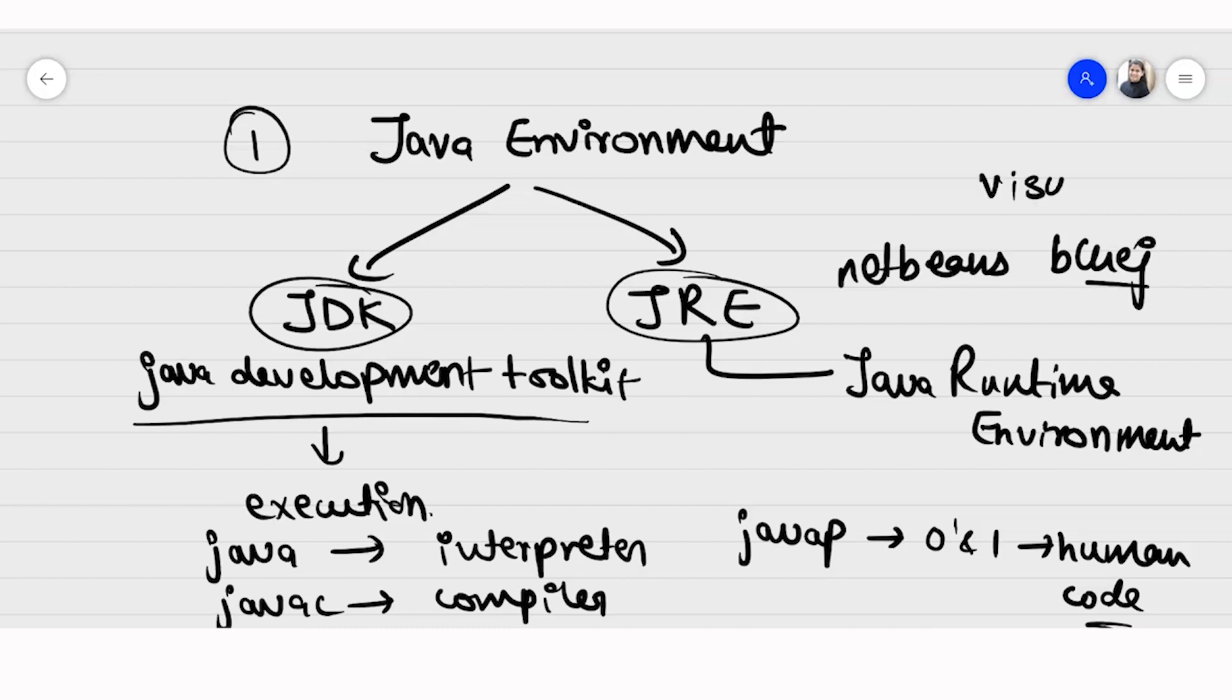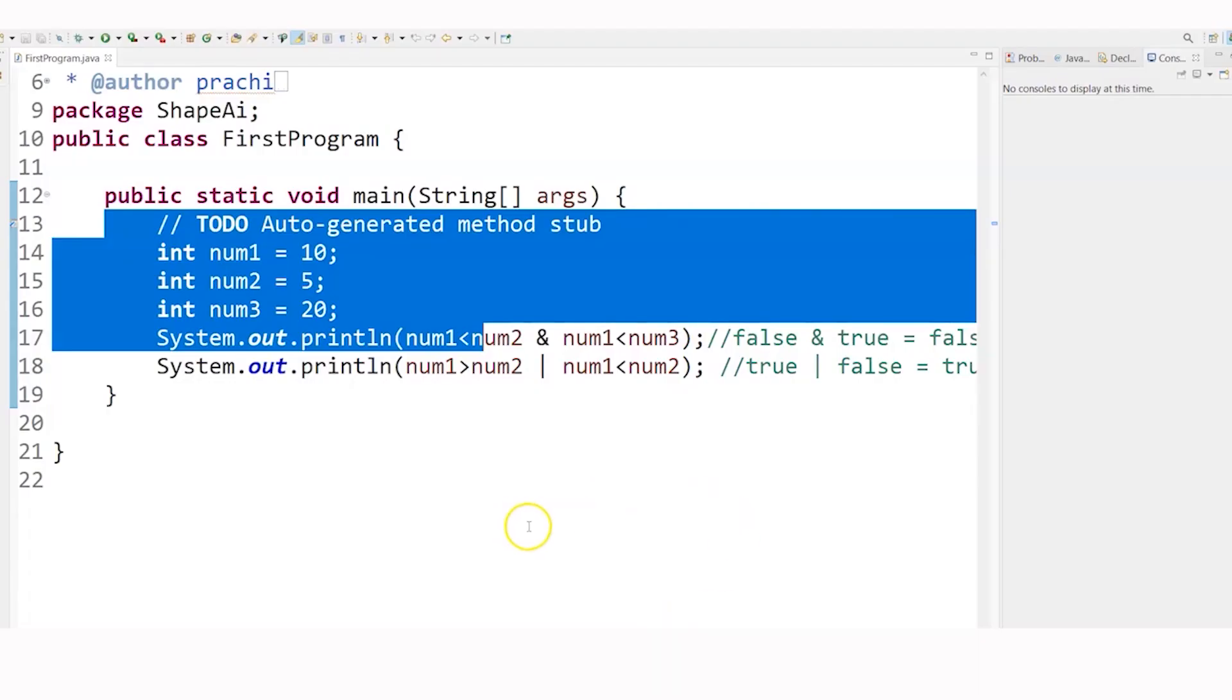You can use Visual Studio also and many more. So these provide you the Java environment where you can code. So these are the development toolkits. This is your Java debugger. This is one of the examples of a Java debugger where you can write your Java code.